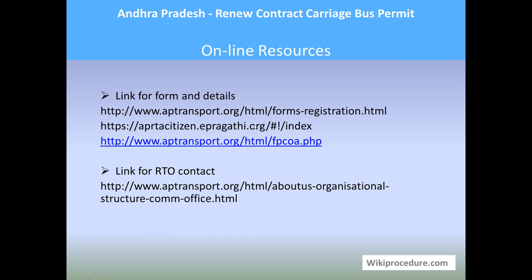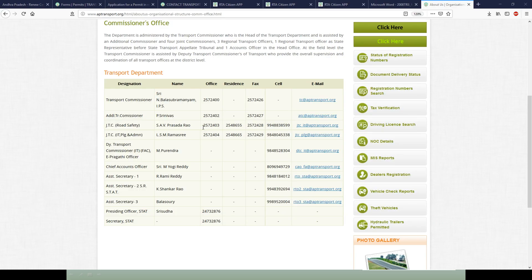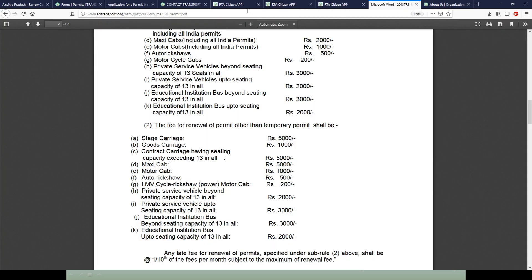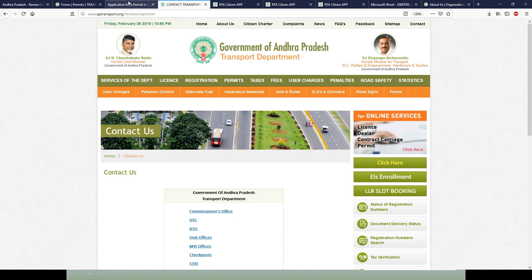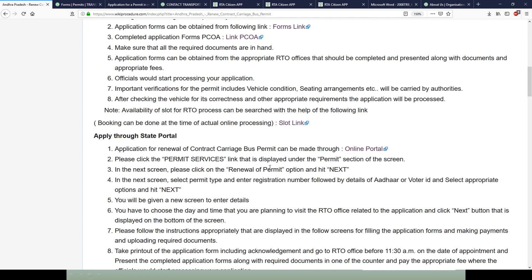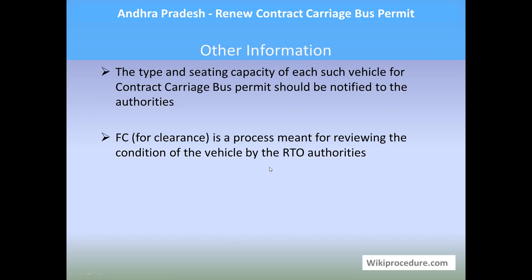Online resources: the websites linked in this page have tremendous potential in helping you complete the procedure and provide useful information, placed at appropriate points to save your valuable time. Other information: the type and seating capacity of each vehicle for a contract carriage bus permit should be notified to the authorities. FC for permits is a process meant for reviewing the condition of the vehicle by RTO authorities. We hope you liked this video — kindly click the Like button and subscribe to our channel for more such procedure videos. Thank you for visiting wikiprocedure.com to know how to renew contract carriage bus permit in Andhra Pradesh.